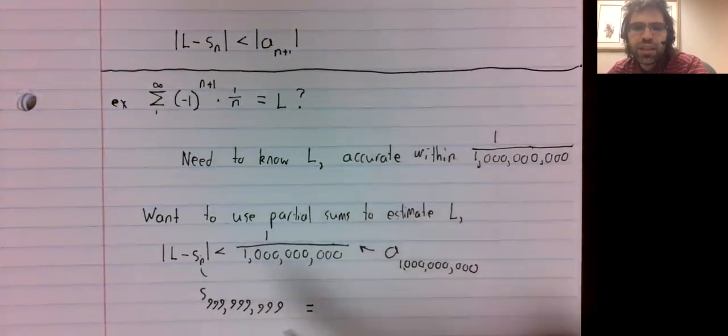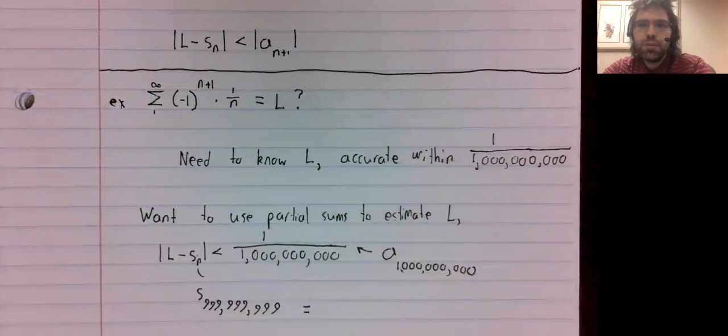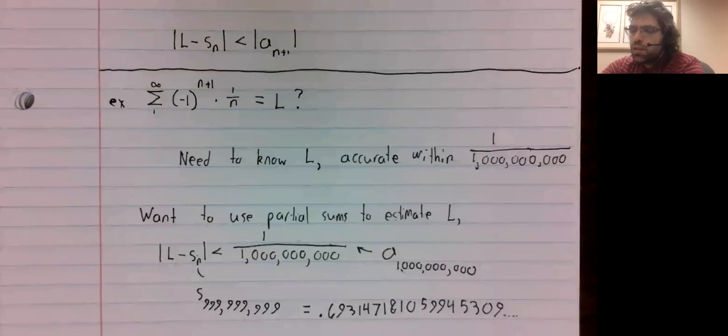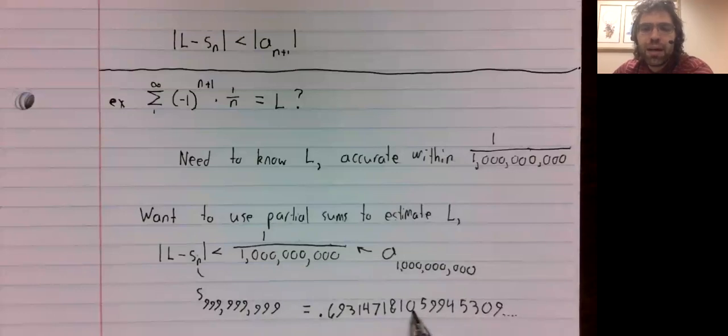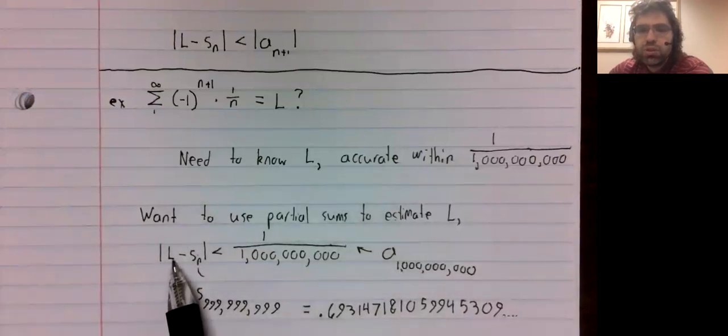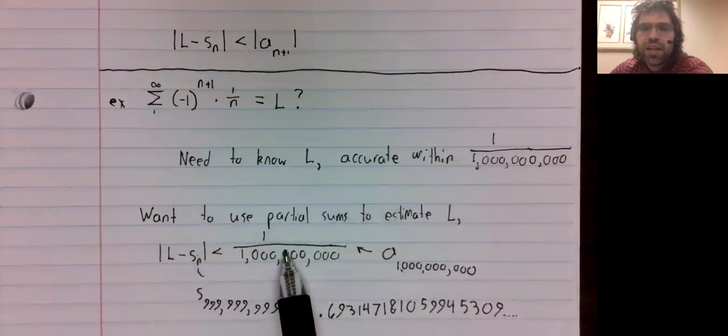And what is this partial sum? Well, it might seem intimidating to find this nth partial sum. You need to add together 999 million, 999 thousand, 999 different numbers. But modern technology makes a sum like this trivial to take. I got this using Wolfram Alpha. And what our theorem says is that this partial sum is very close to our limit. The error is less than this.